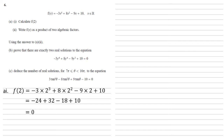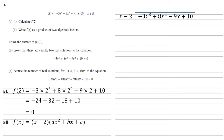For part two we want to write f(x) as a product of two algebraic factors. Since f(2) equals zero, this means that (x minus 2) must be a factor of f(x). So we'll be able to write it in the form (x minus 2) times a quadratic. To find this quadratic we need to divide f(x) by (x minus 2) using long division.